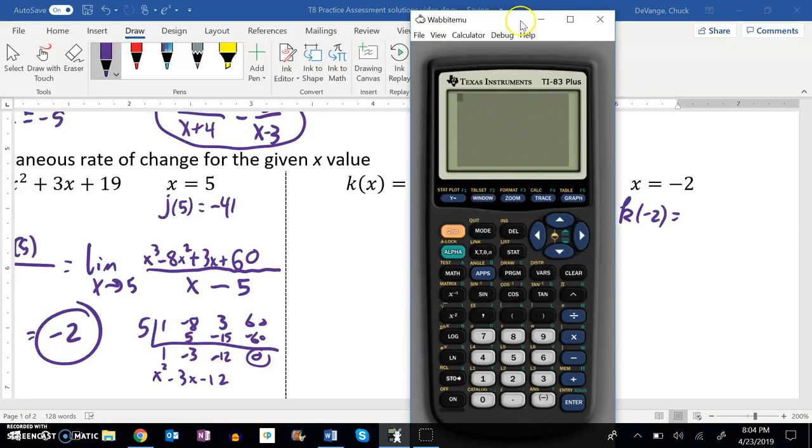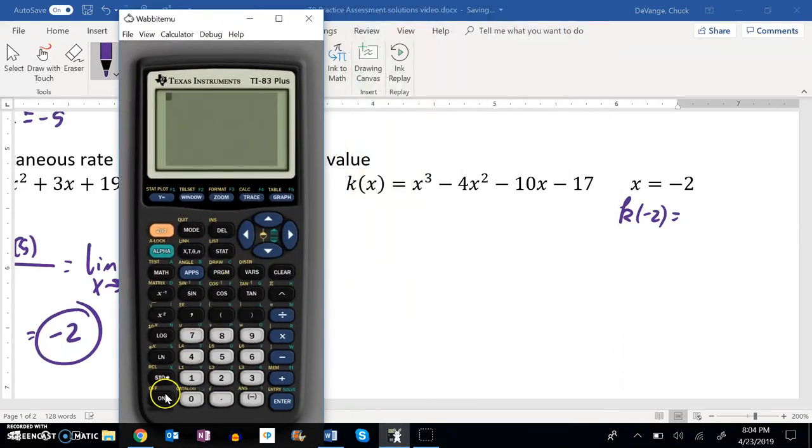I'm going to do this on my calculator. The way that I like to do it is I like to say let X equal negative 2, so negative 2 gets stored in X. Now X is equal to negative 2, and then I can just type this in. I don't have to worry about putting in the negative 2 over and over again. X cubed minus 4X squared minus 10X minus 17.